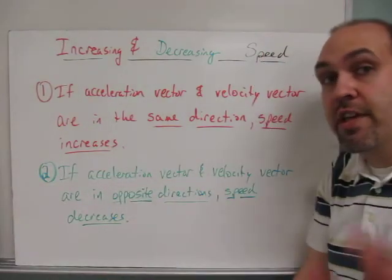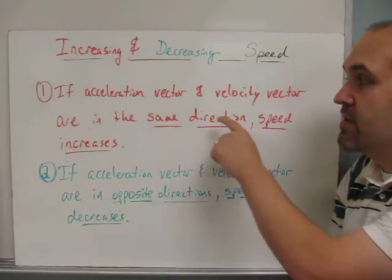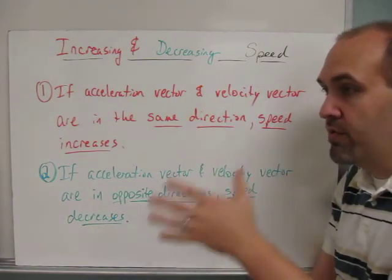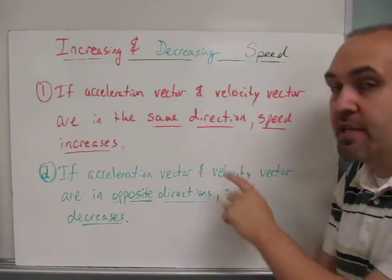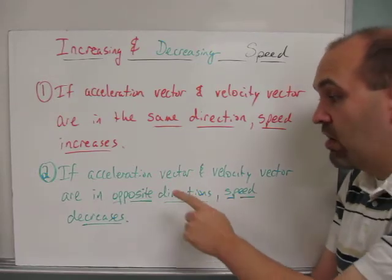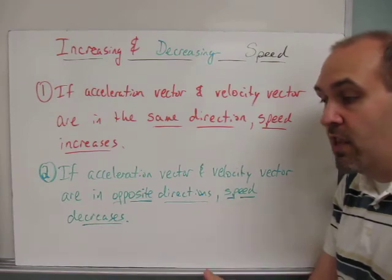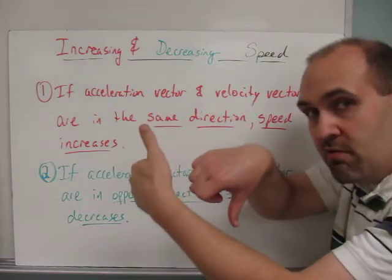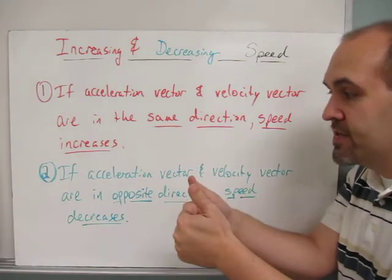So what I want you to get from that is this. If the acceleration vector and the velocity vector are in the same direction, they're both to the right, they're both up, they're both down, they're both left, then the speed increases. But if the acceleration vector and the velocity vector are in opposite directions, the speed decreases. So if velocity is up and acceleration is down, then it's going to slow. If velocity is up and acceleration is up, then it's going to increase speed.